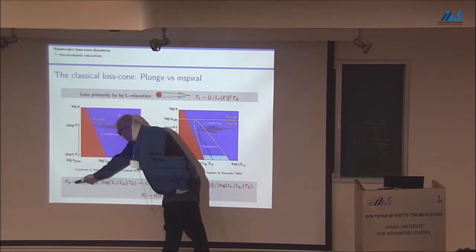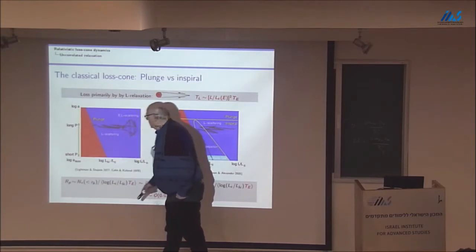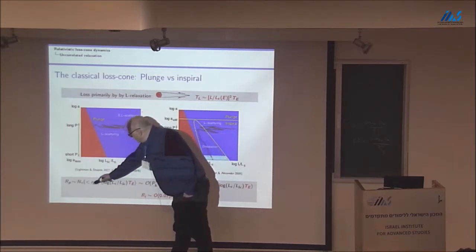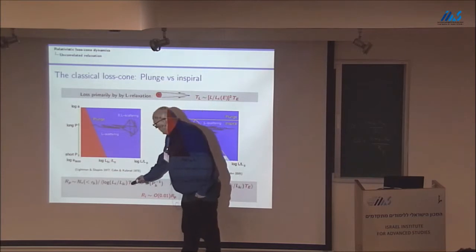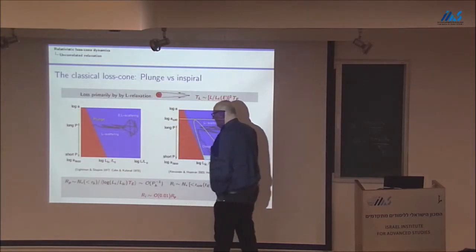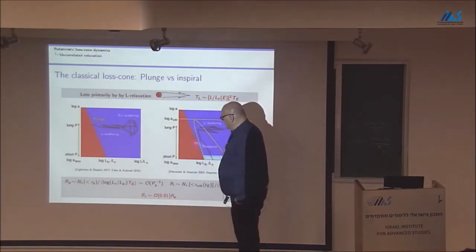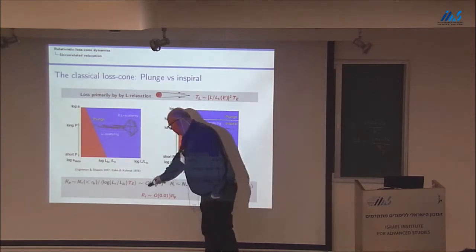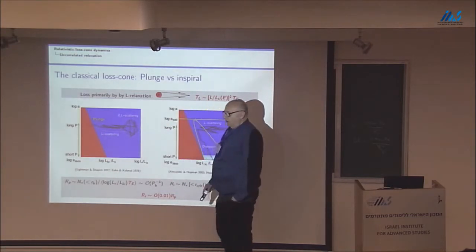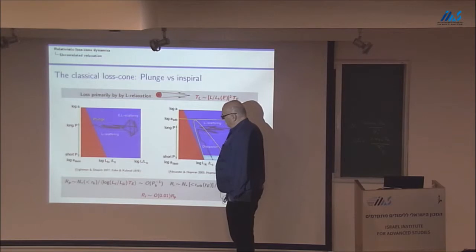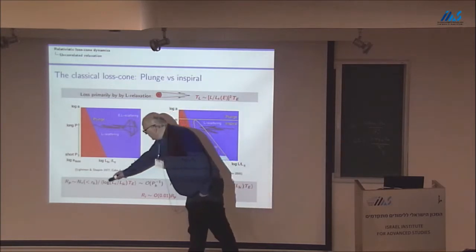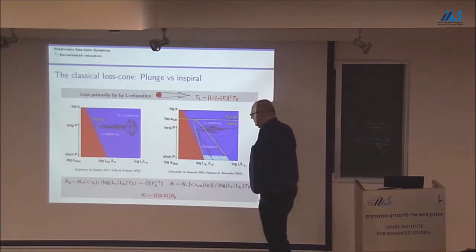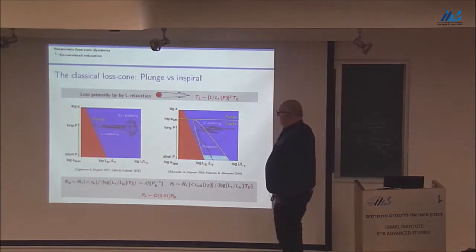So, the rate for plunges is simply the number of stars up to the radius of influence divided by the energy relaxation time. As pointed out by Rees, this is also basically just the inverse of the orbital time. The rates of influence and the logarithmic corrections come from more detailed calculations, which I will not try to reproduce here.